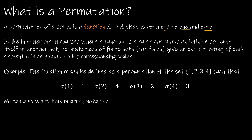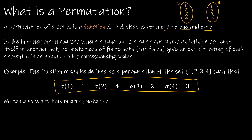For instance, one way that we have written this before — a mapping — might look something like this. Notice this is the set and this is the same set. Essentially we're saying one maps to one, two maps to four, three maps to two, and four maps to three. So notice every element is mapped to one other element and everything gets mapped to by something.